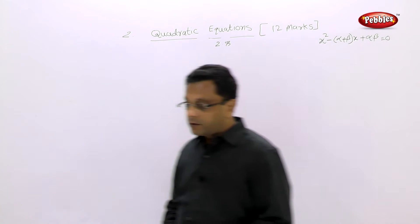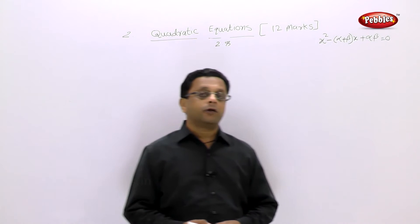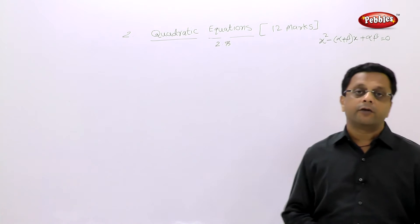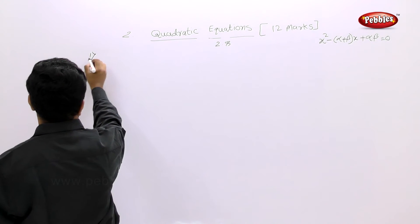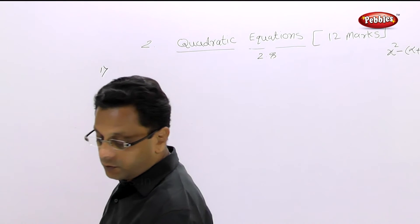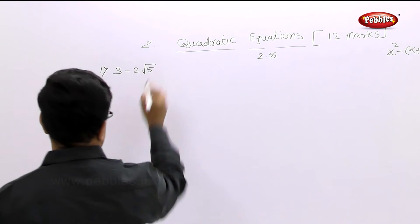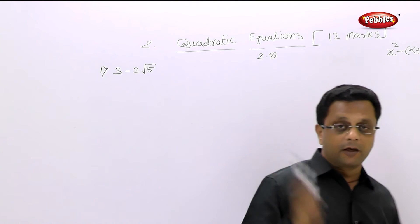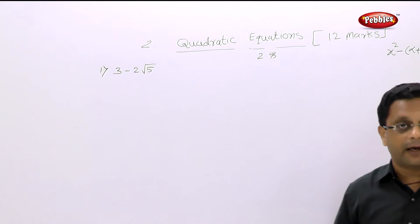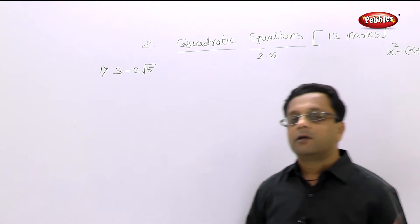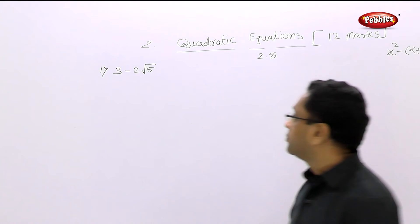Here in question two of 2.8, they are given only one root and asked to find the quadratic equation. The first example: the one root given is 3 minus 2 root 5. We have solved these kinds of examples. As soon as you know that alpha is 3 minus 2 root 5, you should immediately know that the second root must be the conjugate, that is 3 plus 2 root 5.